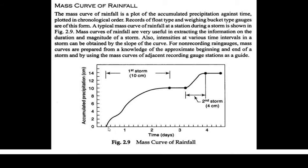For example, at around 30 minutes we may have about 2 centimeters of rain, and from 20 to 30 minutes we have 1 centimeter of rain, but in the mass curve it will represent 3 centimeters — it keeps adding the previous amount of rainfall. This curve is always increasing because it tells us the accumulated mass of rainfall.